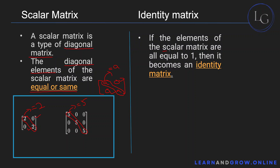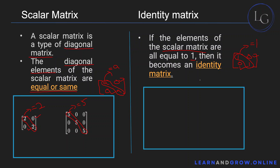An identity matrix is a type of scalar matrix in which the diagonal elements are equal to one. A two by two identity matrix has its principal diagonal elements both equal to one, with zeros outside — so this is an identity matrix. A three by three identity matrix similarly has every element outside the principal diagonal equal to zero, every element inside equal to one — so this is also an identity matrix.